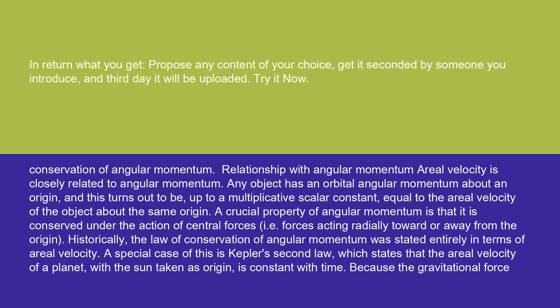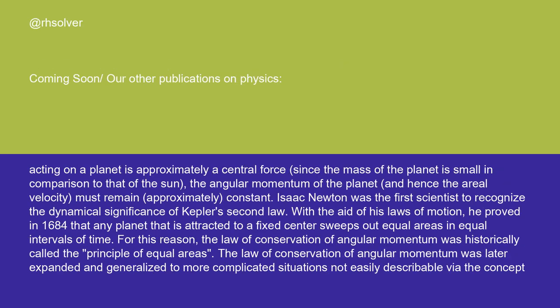A special case of this is Kepler's second law, which states that the aerial velocity of a planet, with the sun taken as origin, is constant with time. Because the gravitational force acting on a planet is approximately a central force, since the mass of the planet is small in comparison to that of the sun, the angular momentum of the planet, and hence the aerial velocity, must remain approximately constant.